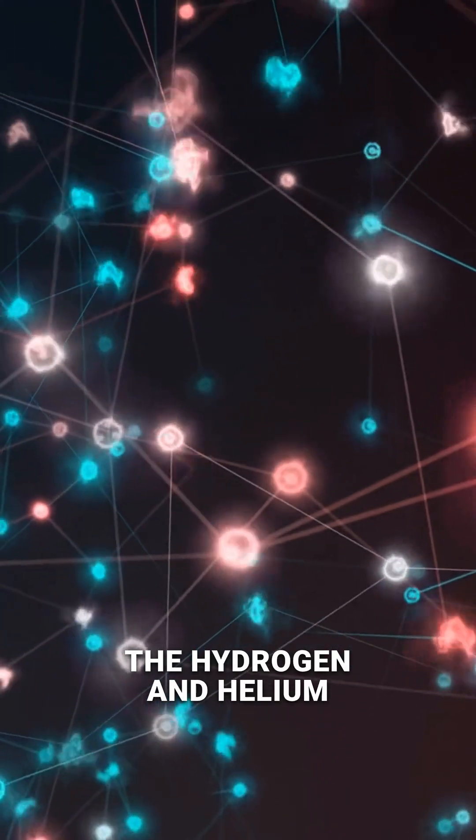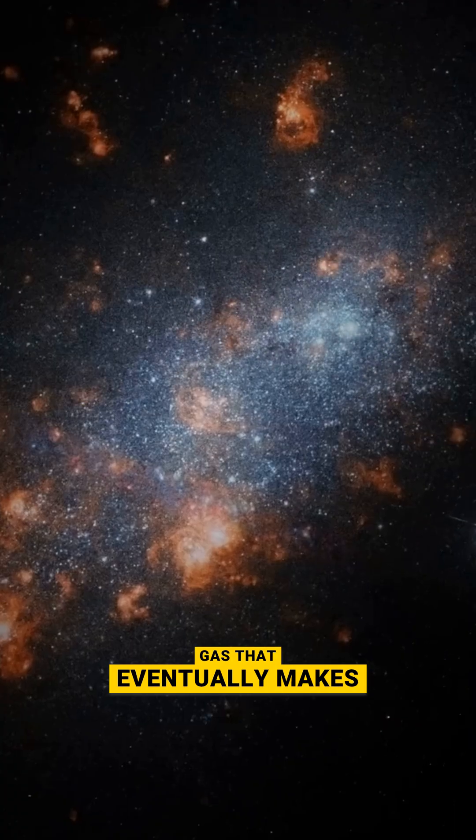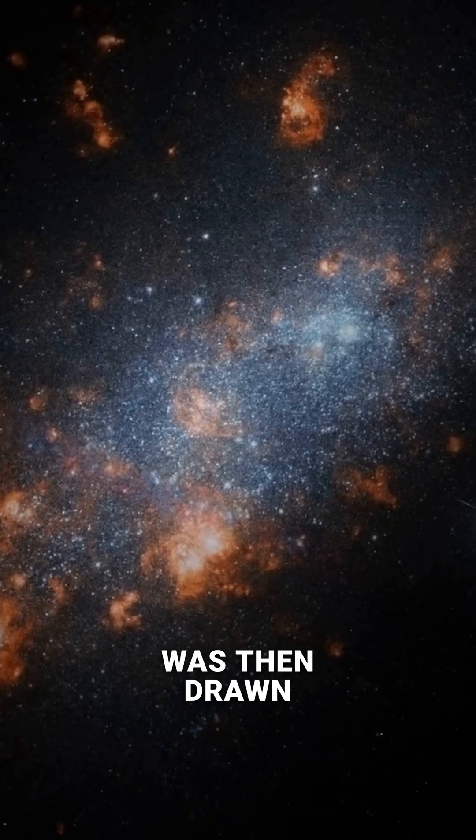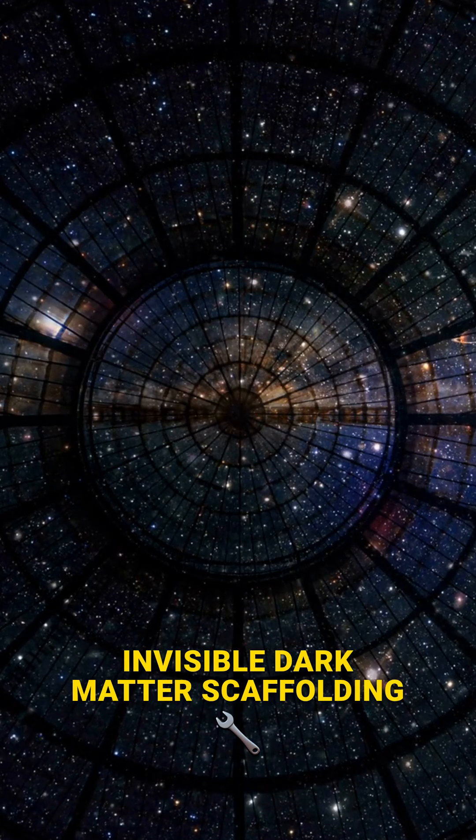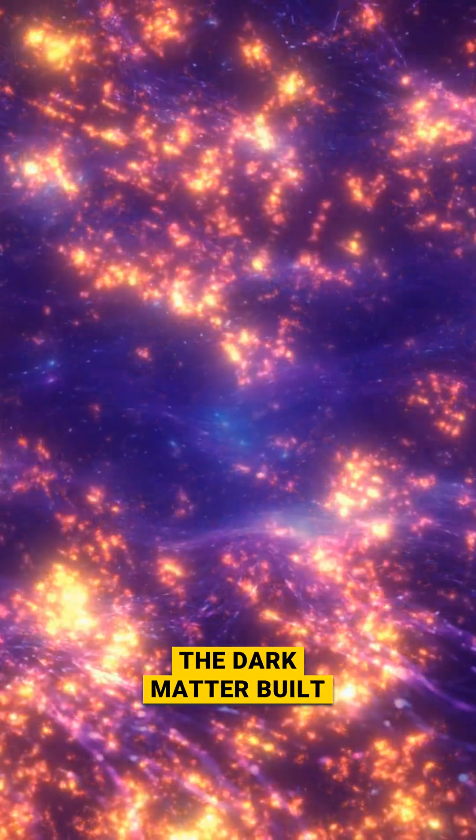The normal matter—the hydrogen and helium gas that eventually makes stars and galaxies—was then drawn onto this invisible dark matter scaffolding. The dark matter built the house, and the visible matter just moved in.